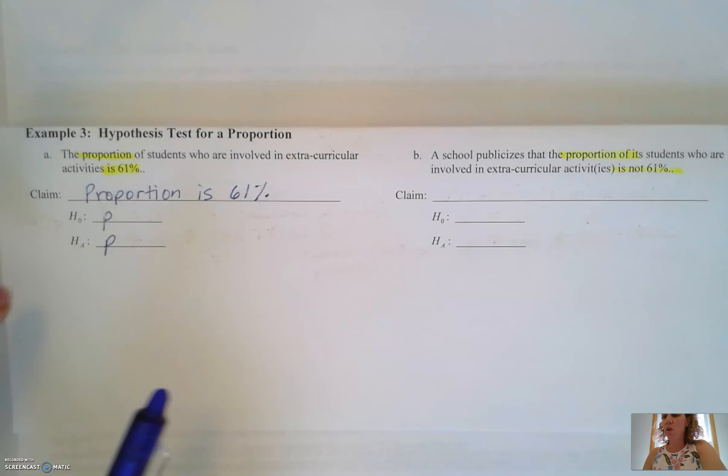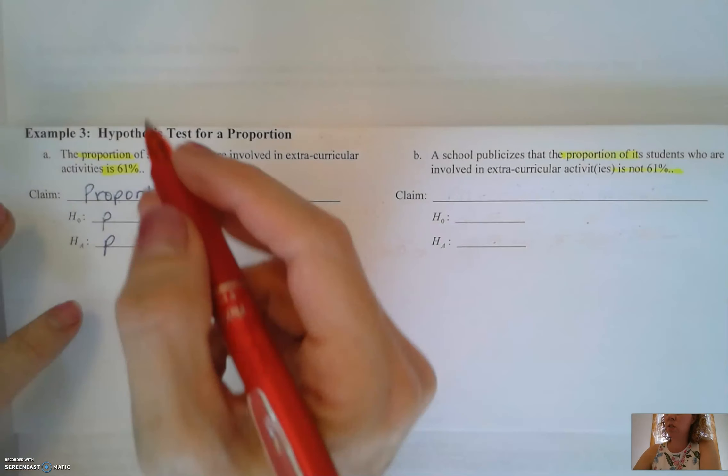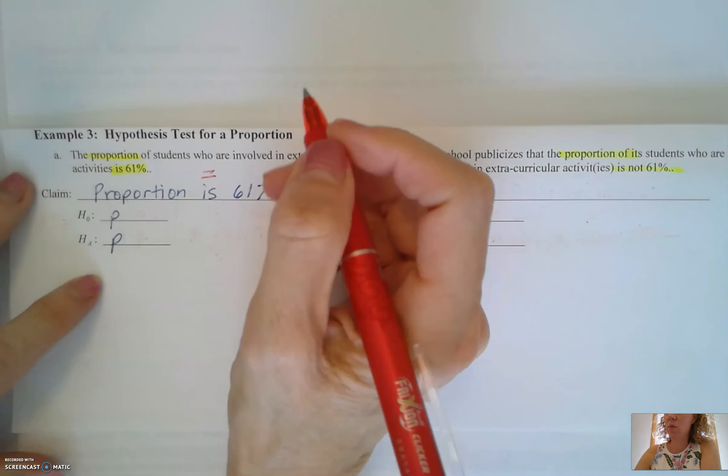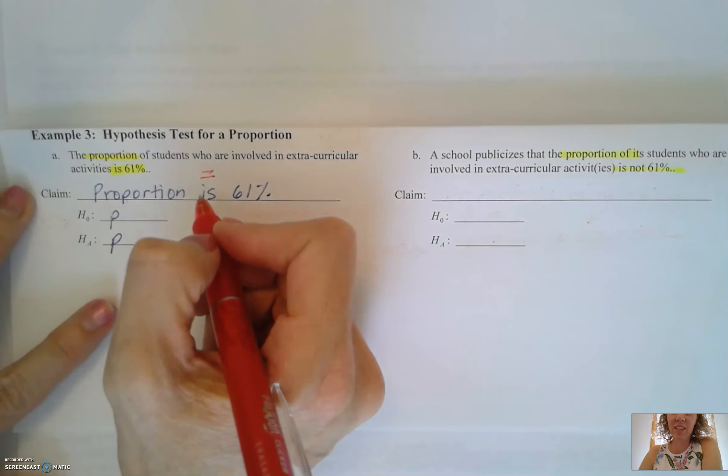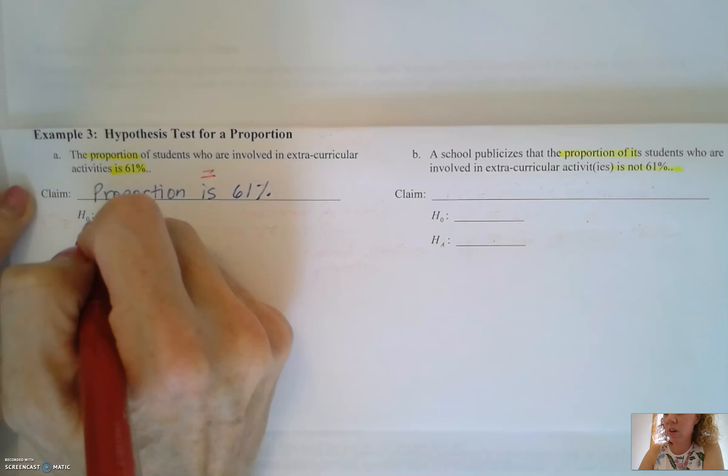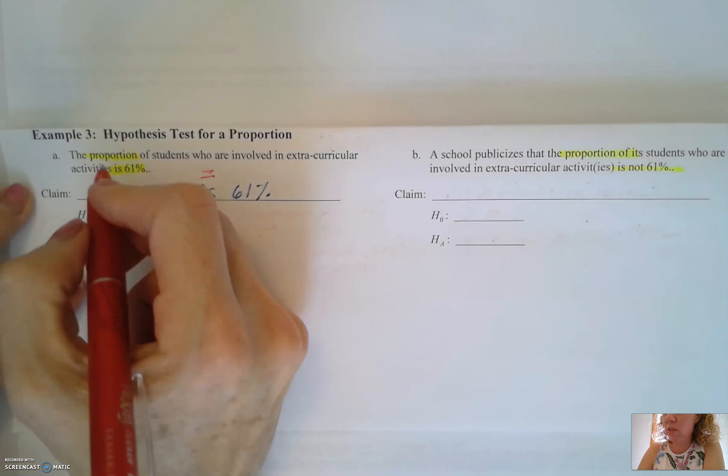Now our inequality here is going to be the proportion is. Is is going to indicate the symbol equal to. The equal to symbol since it does obviously contain equality is going to be written with our null hypothesis H sub 0.